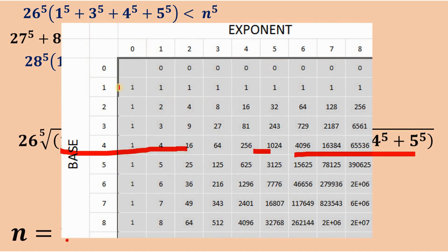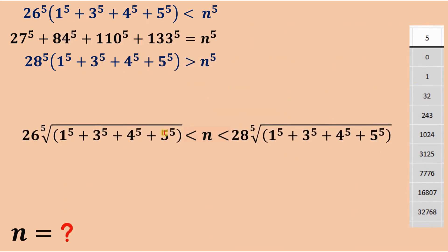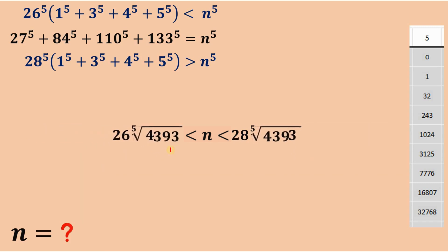From the table, 1 raised to the fifth power is 1, 2 raised to the fifth power is 32, 3 raised to the fifth power is 243, 4 raised to the fifth power is 1024, and 5 raised to the fifth power is 3125. We need the sum of 1 raised to the fifth power plus 3 raised to the fifth power plus 4 raised to the fifth power plus 5 raised to the fifth power, which equals 1 plus 243 plus 1024 plus 3125, giving us 4,393. We replace the expression inside the fifth root with 4,393.